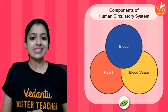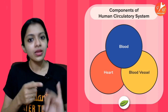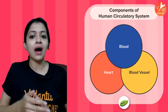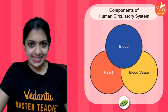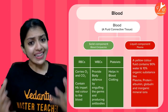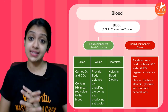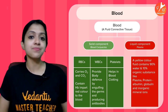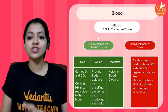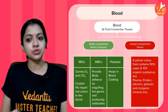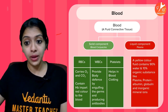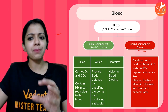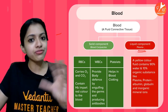The components of the human circulatory system are majorly three: blood, blood vessels, and the heart — together they form our circulatory system. Blood is a fluid connective tissue. It has both a liquid component and a solid component. The liquid component is called blood plasma, which makes up approximately 55 percent of the entire blood contents.